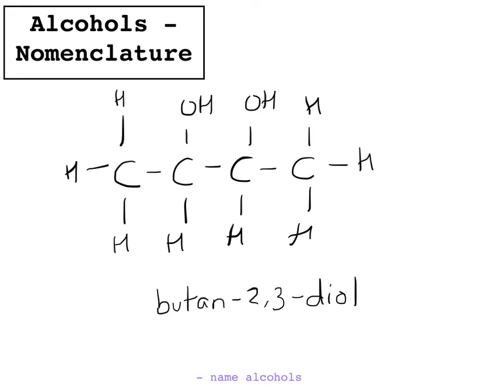You follow the same rules as before with the numbers of the different groups. If there's one OH group, we don't put anything; if there's two, it's di; three, tri; and four, tetra. We put where they are in the middle of the name.